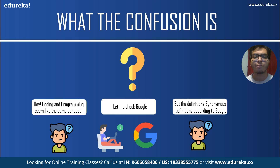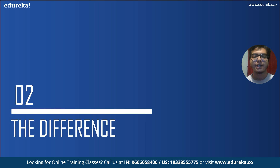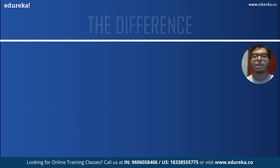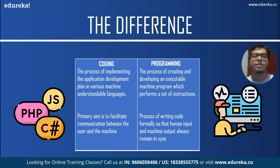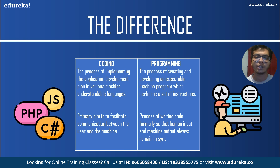But does this mean that coding and programming are similar? The answer is no — there is a difference. Coding is the process of implementing the application development plan in various machine-understandable languages. The computer understands a certain language, so you have to give it commands in the language it understands to get a desired output.